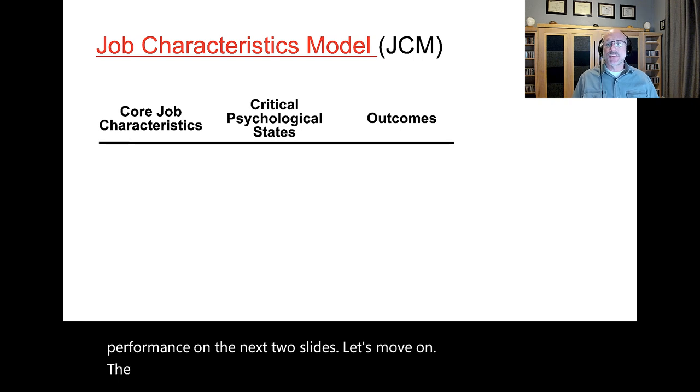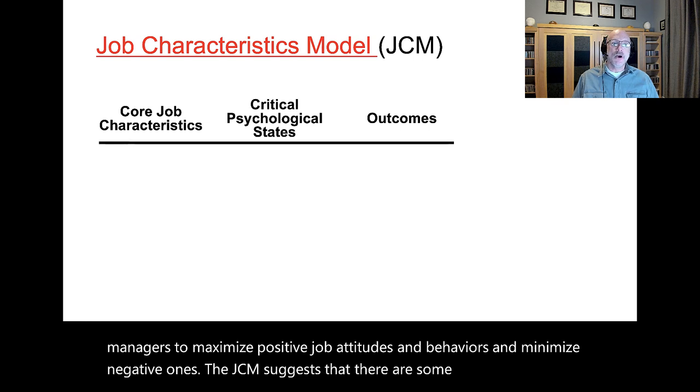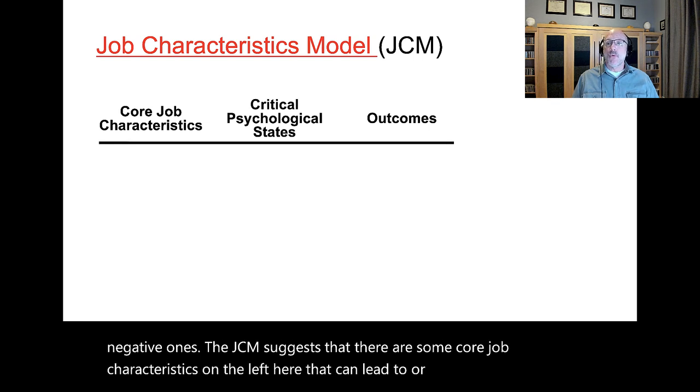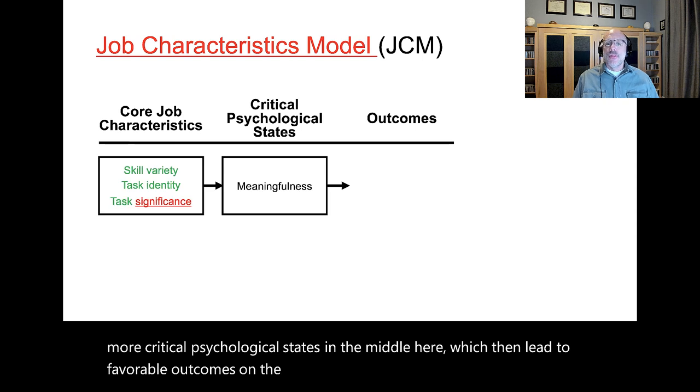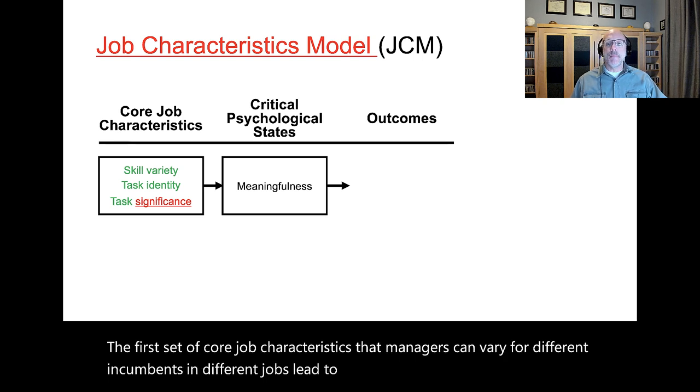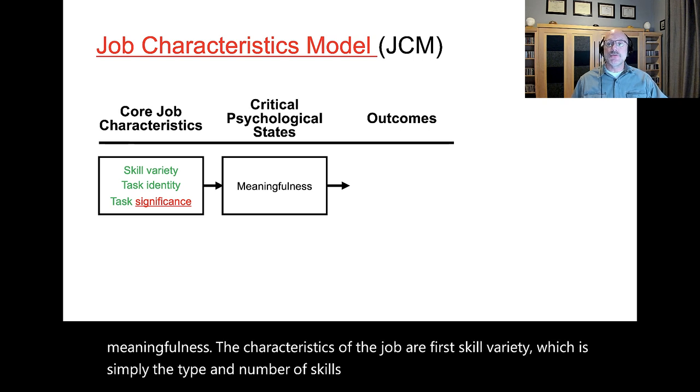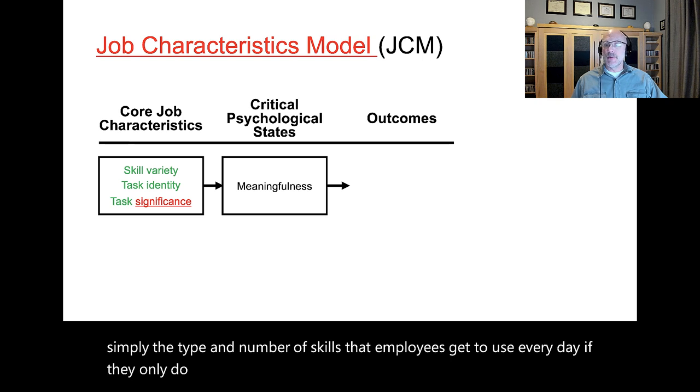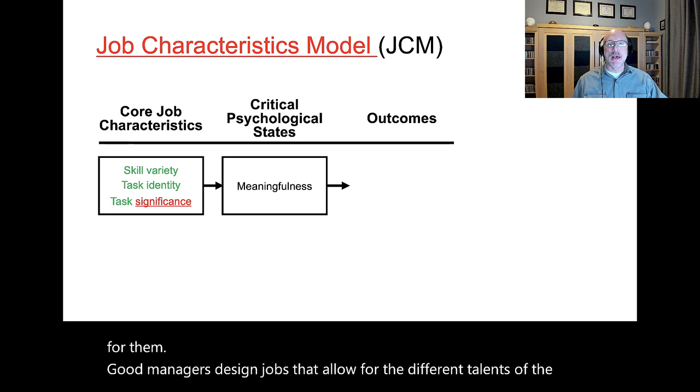The JCM, or Job Characteristics Model, is a model designed to allow managers to maximize positive job attitudes and behaviors and minimize negative ones. The JCM suggests that there are some core job characteristics on the left here that can lead to or sometimes cause one or more critical psychological states in the middle here, which then lead to favorable outcomes on the right here. The first set of core job characteristics that managers can vary for different incumbents in different jobs lead to the psychological state of meaningfulness. The characteristics of the job are, first, skill variety, which is simply the type and number of skills that employees get to use every day. If they only do one thing on an assembly line, that can get very boring. If they get to do five or ten things, that can prove to be much more interesting for them. Good managers design jobs that allow for the different talents of the employees to be utilized, within reason.